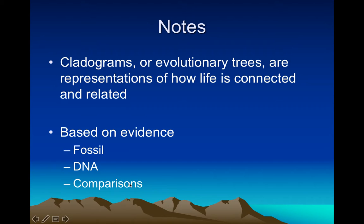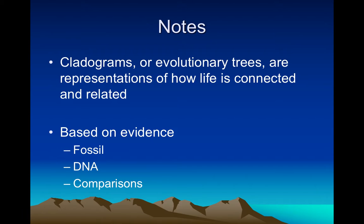The original cladograms were made using fossils. When Charles Darwin first started to develop his theory of evolution in the mid-1800s, we didn't know what DNA was. About a hundred years later, we discovered DNA and started to figure that out. One thing we've discovered is that many of the connections in cladograms based on fossil evidence are being confirmed by DNA evidence, which goes a long way to showing how much we understand about the theory of evolution.